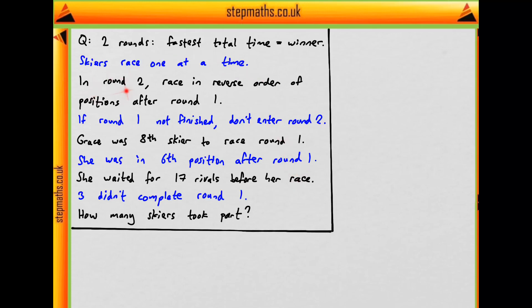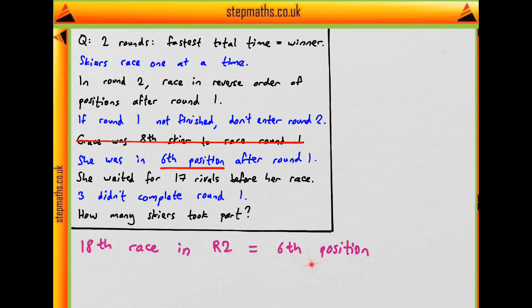In round two, they race in the reverse order of their positions after round one. So it doesn't matter what order they skied in round one — we just need to know she was in sixth position. If she had to wait for 17 rivals before her race, that means she was the 18th racer, which corresponds to sixth position after round one.